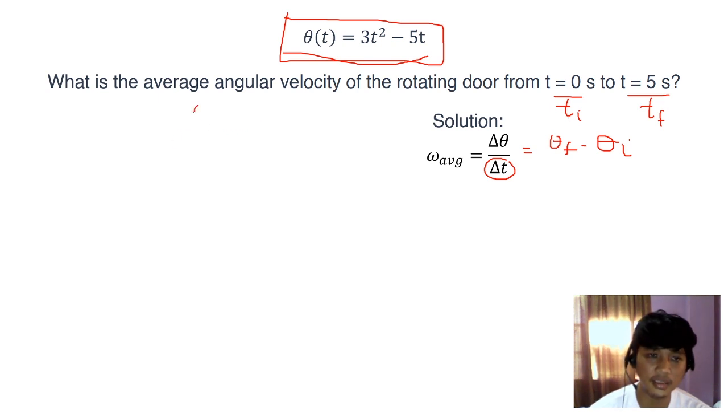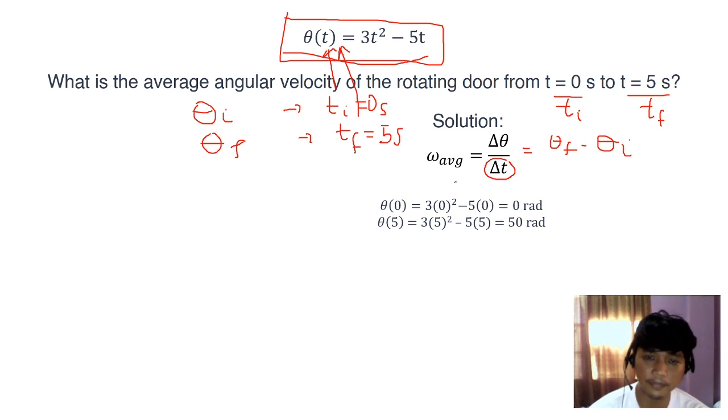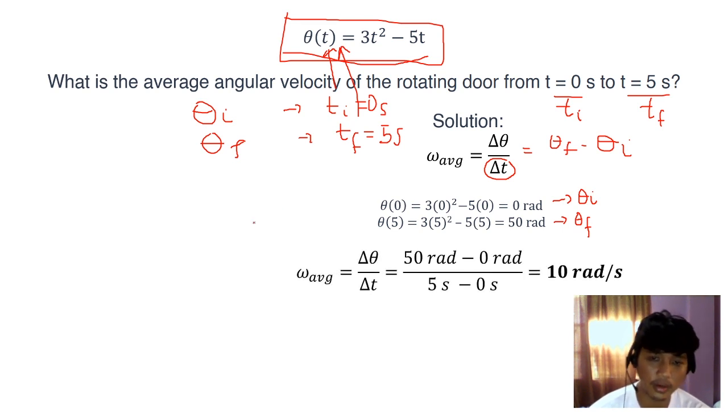It's a good thing the scientist obtained an empirical formula for this particular problem. Just remember that theta i is related to t i, and theta f is actually a function of t f. If you want to get theta i, just substitute t i into this empirical formula, which happens to be 0 seconds, and if you want to get theta f, just substitute 5 seconds into this formula. Theta 0 is equal to 3 times 0 squared minus 5 times 0. We obtain our theta initial to be 0 radians, and our theta final to be 50 radians. It's just a matter of substituting it. And we arrive at our final answer for the average angular velocity to be 10 radians per second.